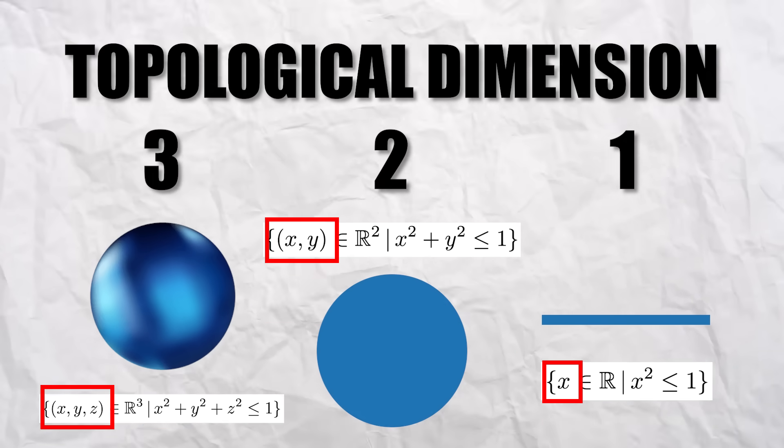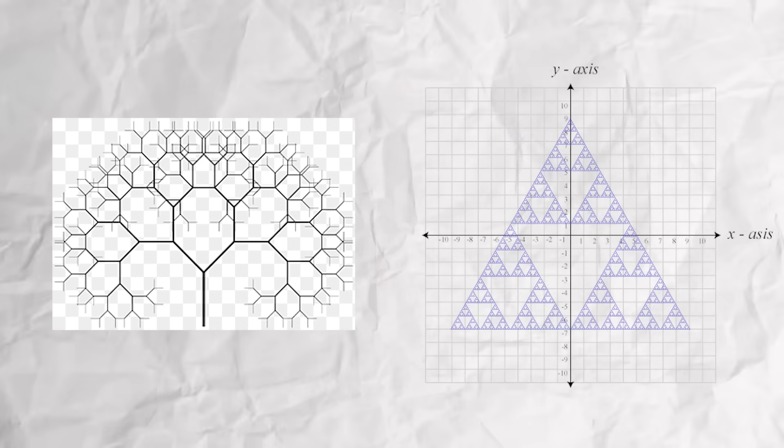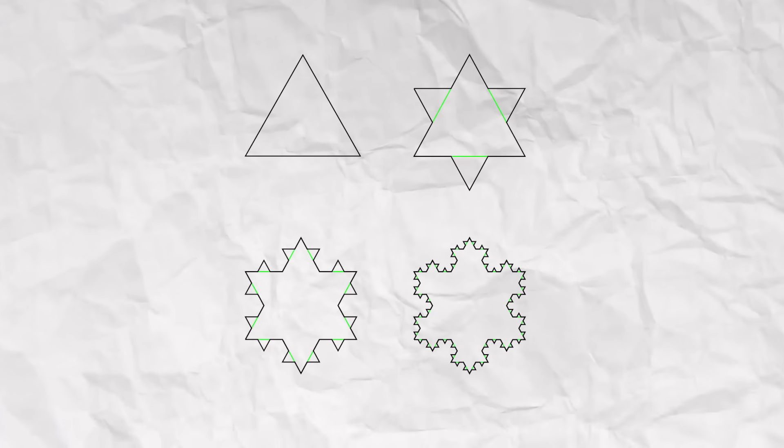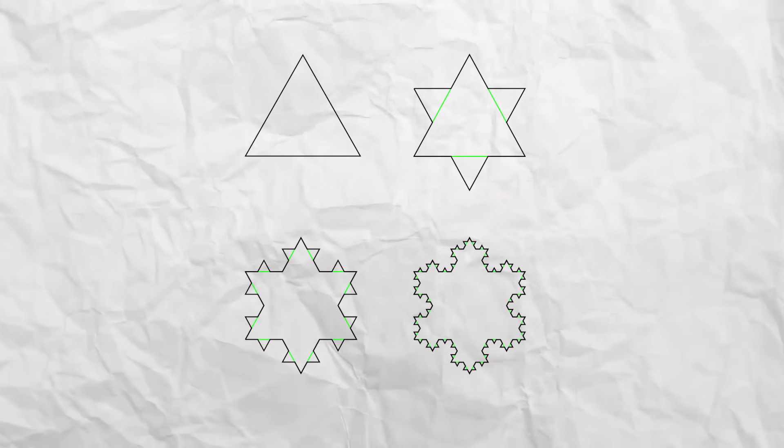But fractals feel a little out of place here. They don't take up area like a shape does, but they require two planes to be represented, so they kind of fit somewhere in between. And come the end of World War I, Hausdorff thought the same. He devised another way to describe an object's dimension as how many copies it takes to multiply its size.